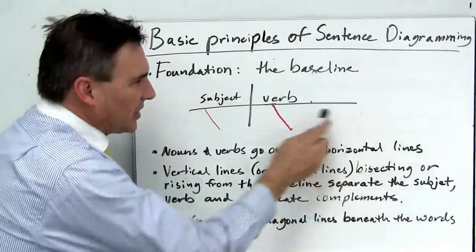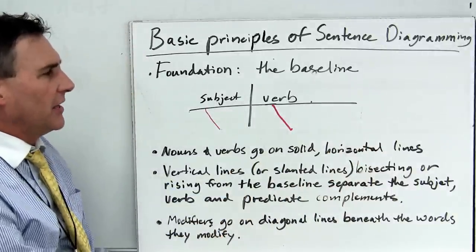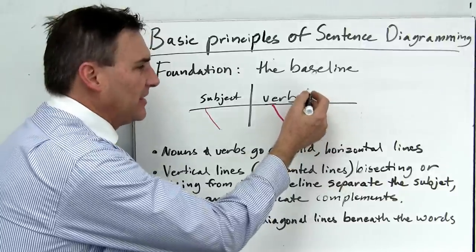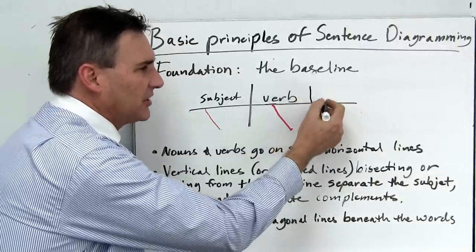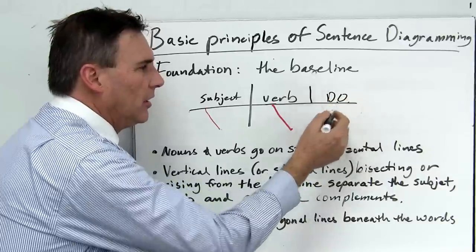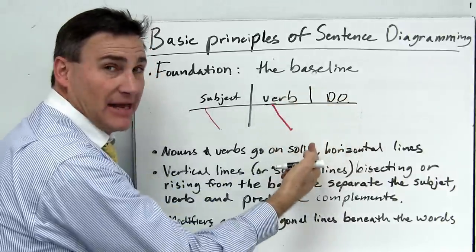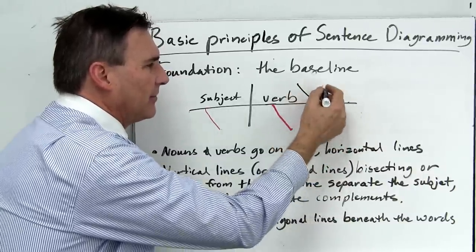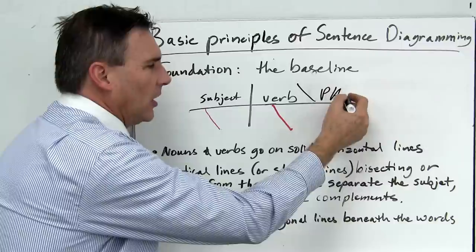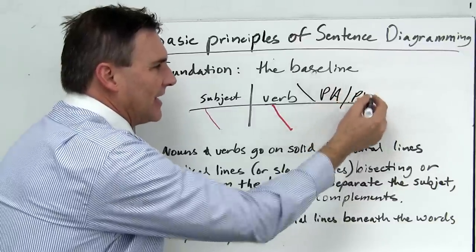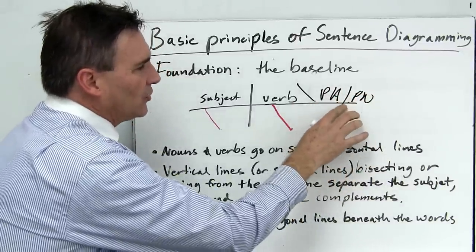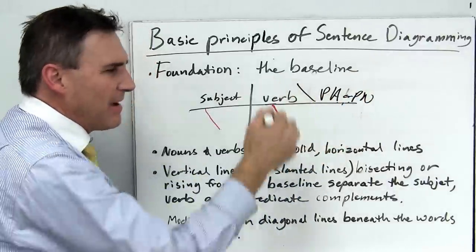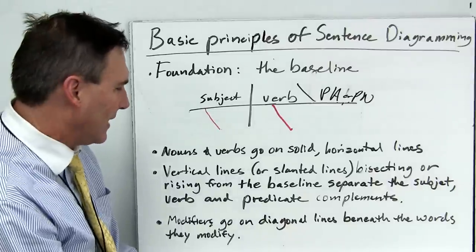Nouns and verbs go on the solid horizontal line including subject complements and verb complements. Verb complements like direct objects go behind a solid straight up line that doesn't bisect, just goes up. Or you may have predicate adjectives or predicate nominatives going behind a diagonal line. And we'll talk more about that later. A diagonal line that points back to the subject.